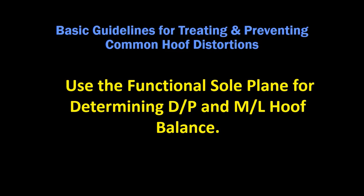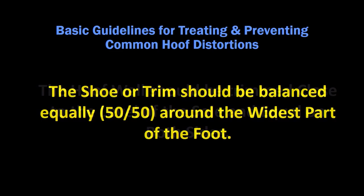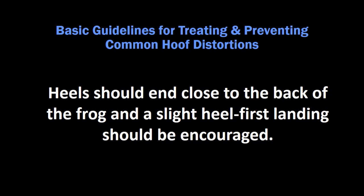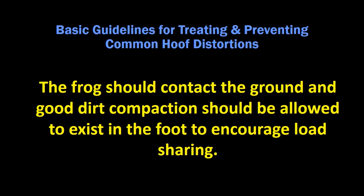Basic guidelines for treating and preventing common hoof distortions: use the functional sole plane for determining dorsal-palmar and medial-lateral hoof balance. The hoof wall should be trimmed close to the level of the sole and equal on both sides. The shoe or trim should be balanced equally, 50-50, around the widest part or center of the foot. Heels should end close to the back of the frog and a slight heel-first landing should be encouraged. The frog should contact the ground and good dirt compaction should be allowed to exist in the foot to encourage load sharing.